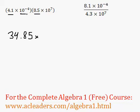And now we can combine the 10s, we have 10 to the negative 4 times 10 to the 7. Because we're just multiplying the 10s, we can add the exponents. Negative 4 plus 7 is just 3. So 10 to negative 4 times 10 to the 7 is just 10 to the 3.